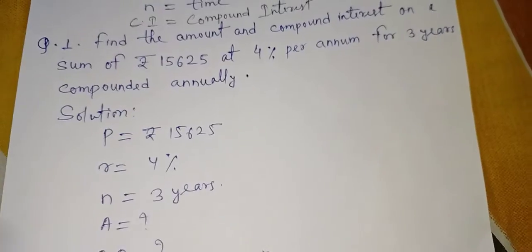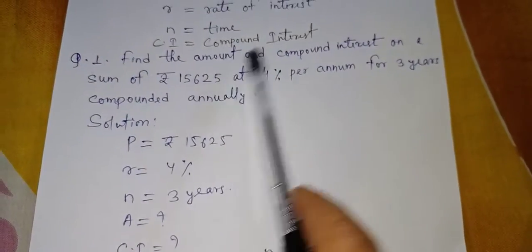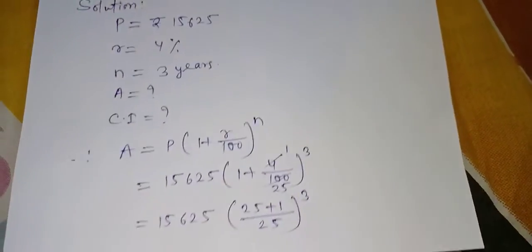Rate is 4% and the principal is 15,625. So I wrote all those things here children after reading the question. And I wrote we have to find amount and compound interest. That is, amount is question mark, compound interest is question mark. So to find amount I will use amount formula, that is number 2.